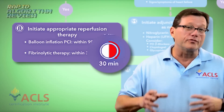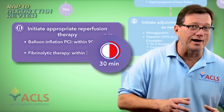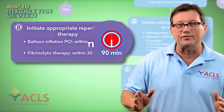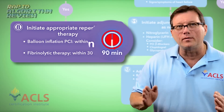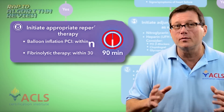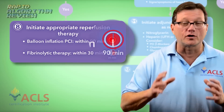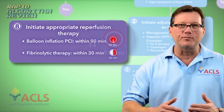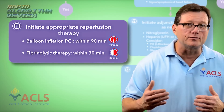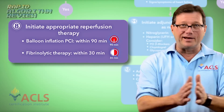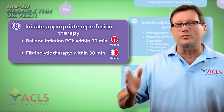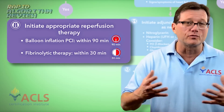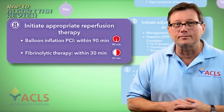Looking at the algorithm, there are suggested time frames for opening up this vessel. If we're using fibrinolytic therapy, it should be within 30 minutes — that's our goal — and we should have done our exclusion checklist within the first 10 minutes of the patient hitting the ER. Or, if they're going to the cath lab, door-to-balloon time should be within 90 minutes. That's why it's so important in the field to call early — give the hospital time to prepare so we can reduce the time it takes to open up that vessel and reperfuse the heart.